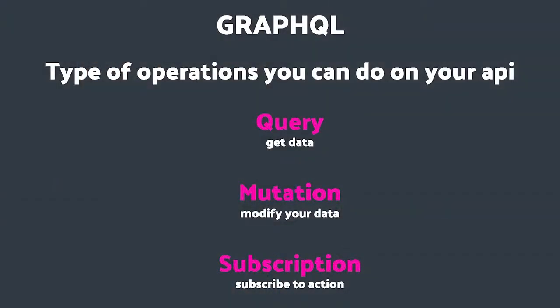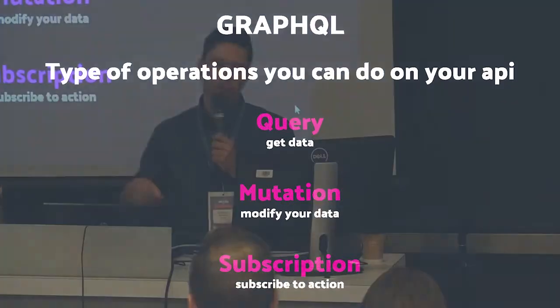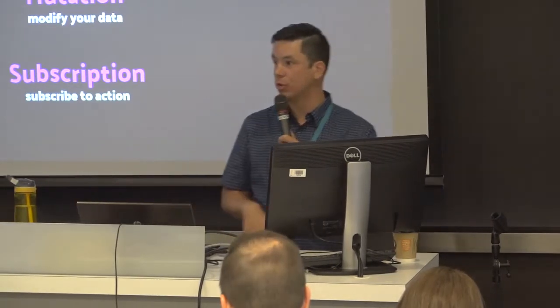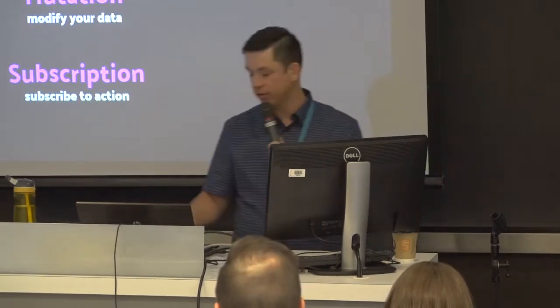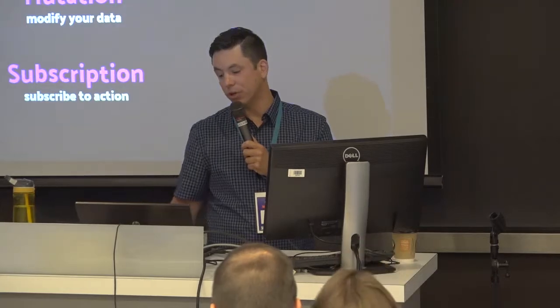There are three types of operations you can do with GraphQL. You can do a query — which is what we'll see this morning — and that's just to retrieve data. You can do mutations, which modify your data, and subscriptions, which allow a person to subscribe to different actions. Mutations and subscriptions we won't go into in detail today.